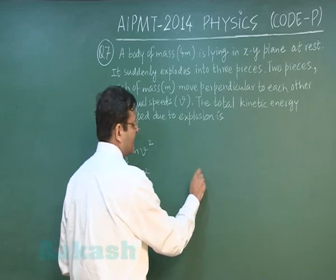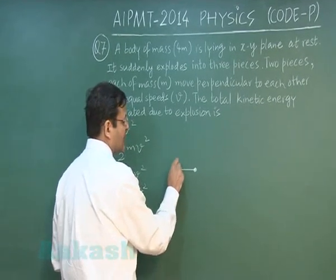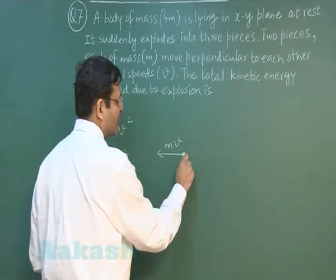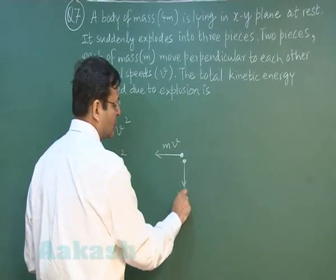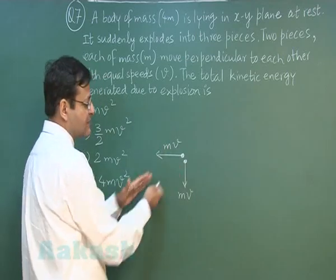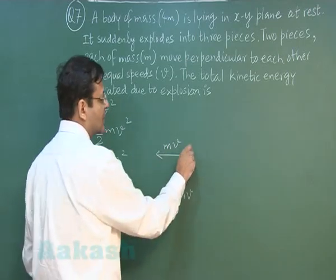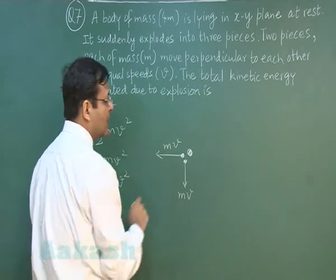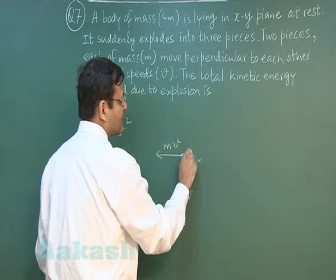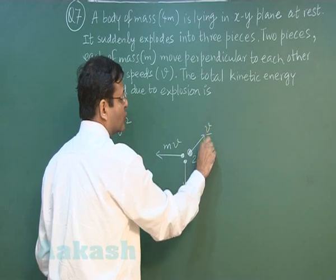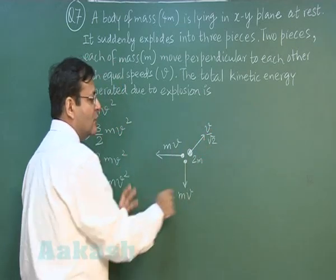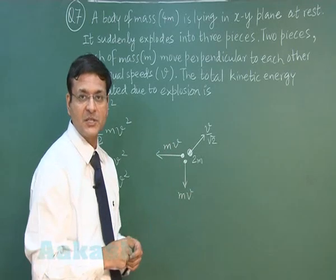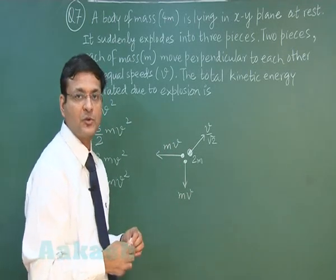A mass m is moving with speed v and another mass m is moving perpendicular to this. Total momentum of the system is mv√2 in this particular direction. The third mass will be 2m because the total mass given was 4m. This 2m must have been moving with speed v/√2, because then only you can balance the total momentum equal to zero, since initially it was at rest. Final momentum will also be zero.